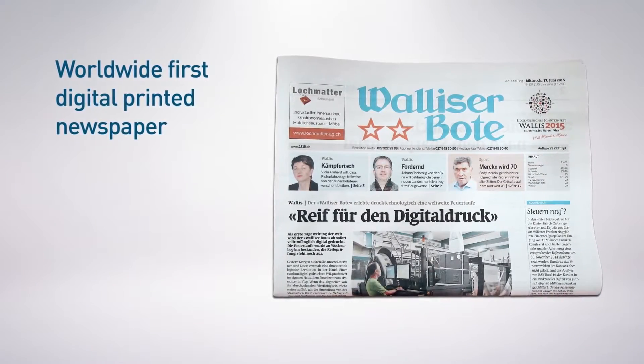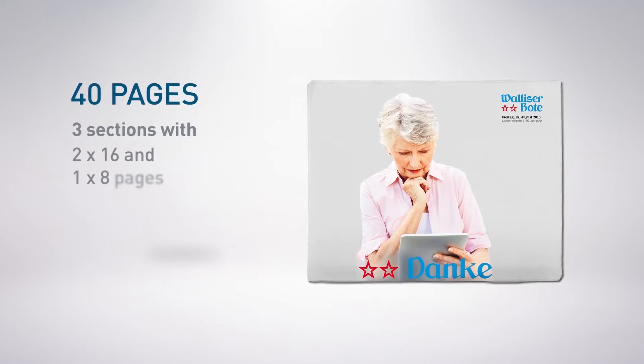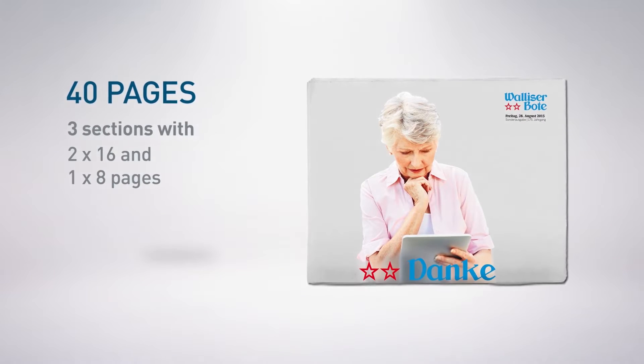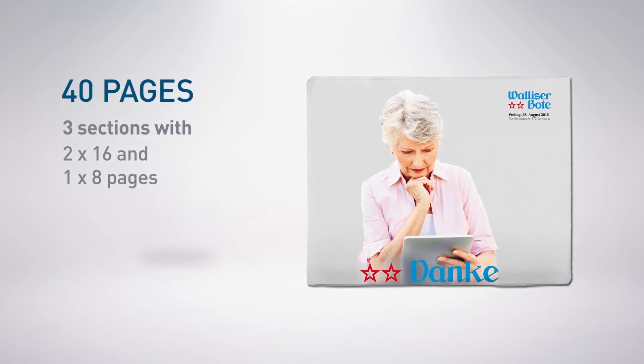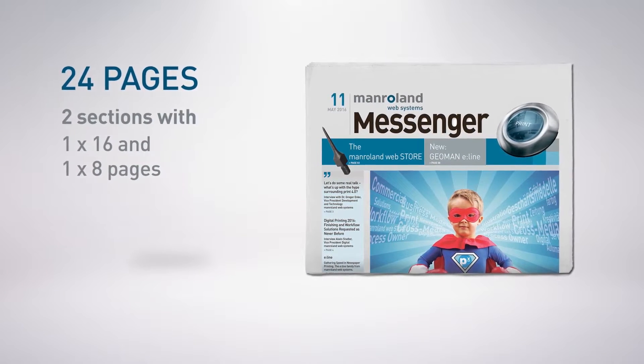Flexibility and variability are convincing. We will present this to you at our live production of two different newspaper products. The first paper has 40 pages, 3 sections with 2x16 and 1x8 pages. The second has 24 pages, 2 sections with 1x16 and 1x8 pages.